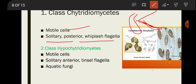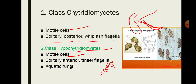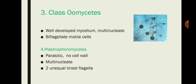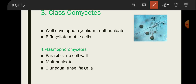A microscopic diagram of class Chytridiomycetes is shown. The second subclass is Hypochytridiomycetes, which also has motile cells but with a tinsel-type flagellum — one that has hair-like structures on its entire surface. Hypochytridiomycetes involves aquatic fungi.